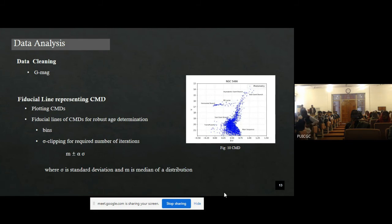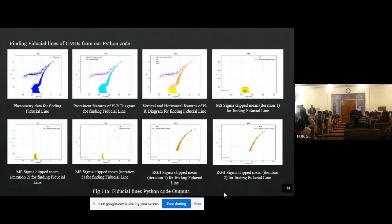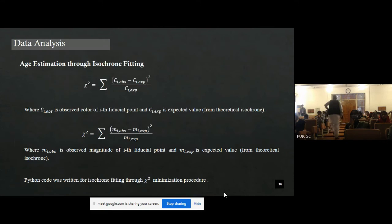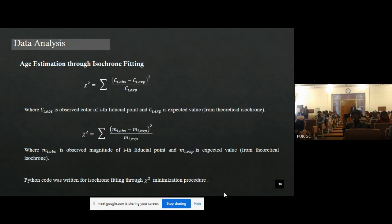For that, we wrote a Python code which works on binning and then sigma-clipping binning. These are some outputs generated while our code is processing. Finally, after getting the fiducial lines, we applied least squares regression to fit isochrones on the fiducial points. For the main sequence and red giant branch, the binning was done on color, while for the subgiant branch, the binning was done on magnitude because it is nearly horizontal.